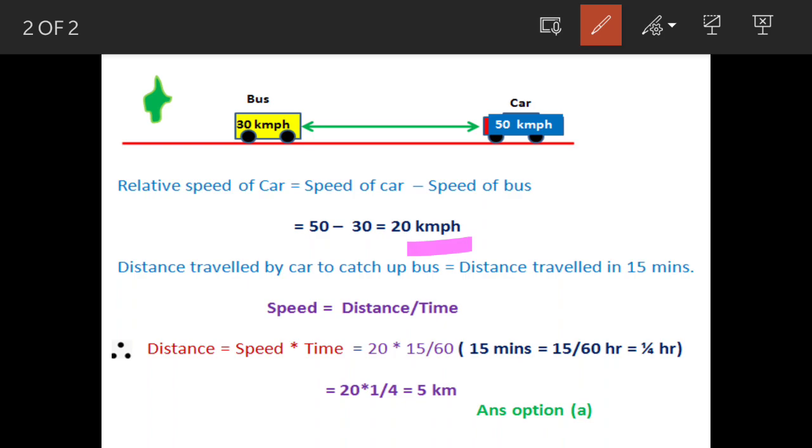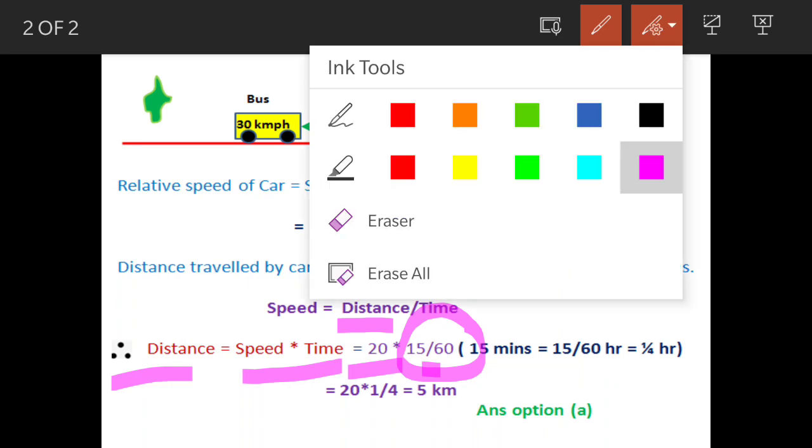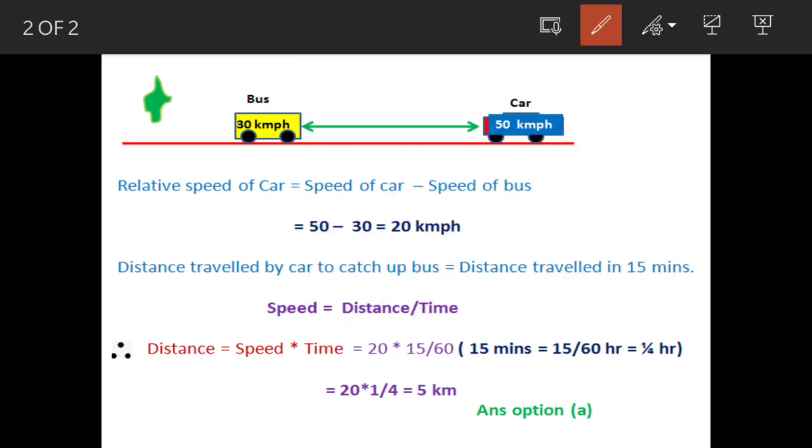We'll use this formula: speed is equal to distance upon time. So distance will be equal to speed into time. What is speed? Speed is 20 kilometers per hour. What is time? 15 minutes. This we need to convert into hours because the speed is in kilometers per hour. When we convert 15 into hours, it becomes 1 by 4 hours. So 20 multiplied by 1 by 4 equals 5 kilometers.